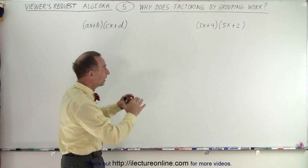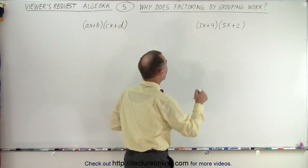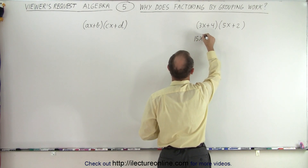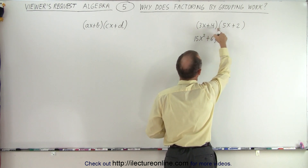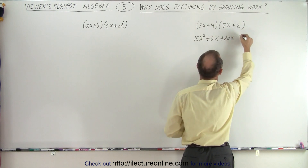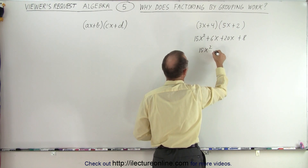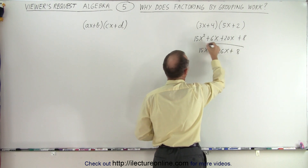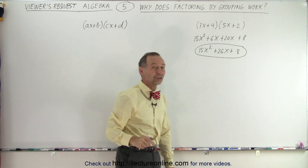Here's the way it works. First, let's come up with a trinomial by multiplying those two binomials together. When I multiply this together, I get 15x squared. 3x times 2 gives me plus 6x. 4 times 5x gives me plus 20x. And 4 times 2 gives me plus 8. When I combine the two middle terms, I get 15x squared plus 26x plus 8. This is the polynomial that we get when we multiply those two binomials together.